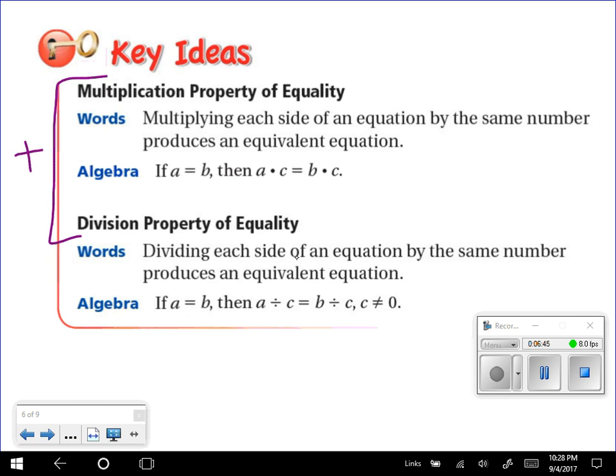Multiplying and dividing each side of an equation by the same number produces an equivalent equation. So if A equals B in both of these cases, then A times C equals B times C. And A divided by C equals B divided by C, as long as C isn't 0. That's key. But we won't run into that very much.